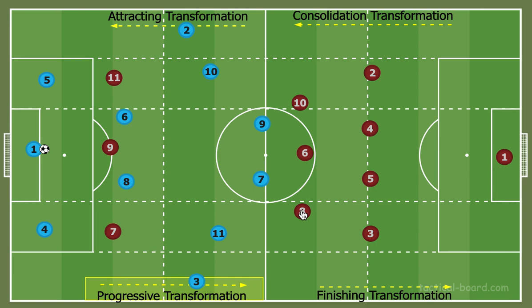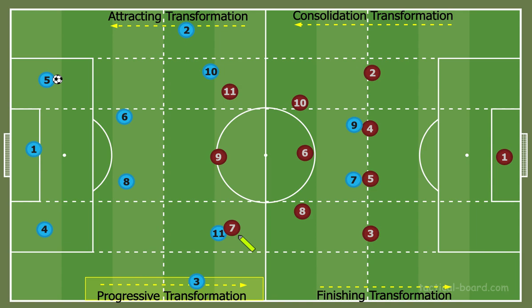Now we have our team dropping into a mid block, a 4-3-3. The progressive transformation — the transformation piece — comes here when the team establishes possession in the midfield third and their shape can change. We're no longer using the goalkeeper. We have two strikers, an advanced interior attacking midfielder, and another on the opposite side. This is where our first transformation comes: maybe we go with a single pivot against the 4-3-3 and rotate to form a back three.